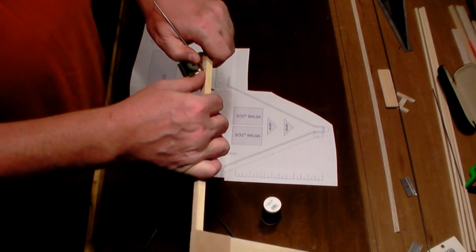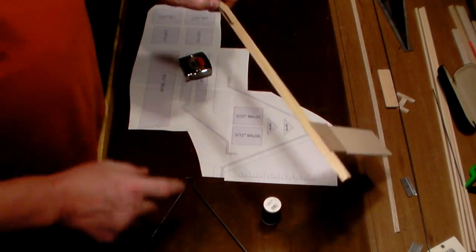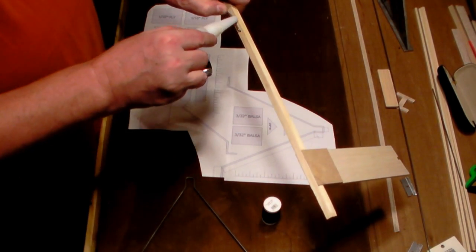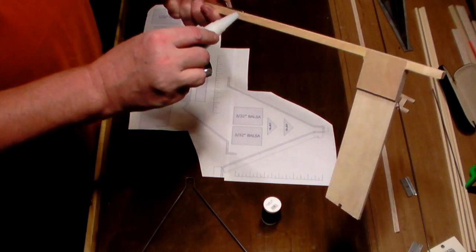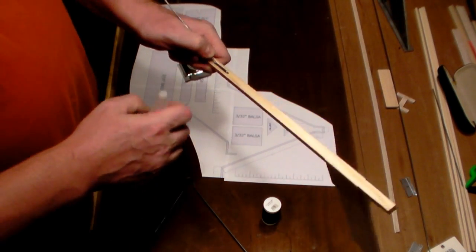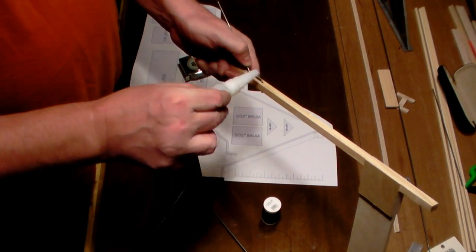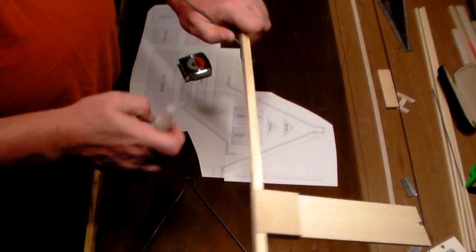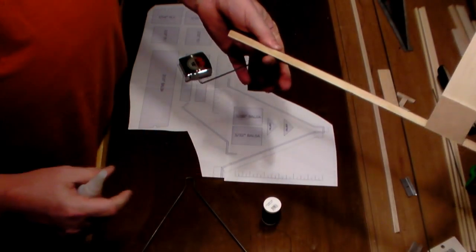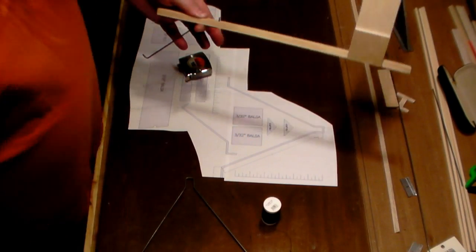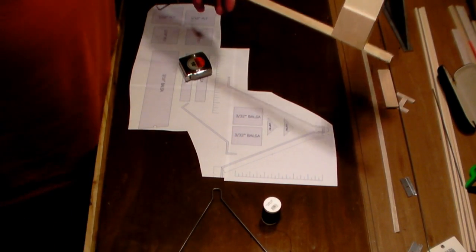If we wrap it nice and tight and complete, then that's going to hold it in place. But when we're done, we're going to take our thin CA. Medium will work, but I prefer thin. Then we're just going to saturate all that thread. That thread by itself is not very strong, but once we get enough wraps of it and then we hit it with CA and let it cure, it's going to be more than strong enough to hold our tail skid in place. So I'm going to do that now.